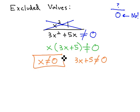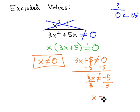We already have that x is not equal to 0, the x is alone. The other equation, we can quickly solve by subtracting 5, 3x is not equal to negative 5, and dividing by 3 to get x is not equal to negative 5 thirds.